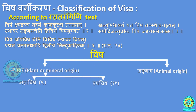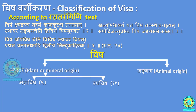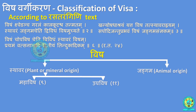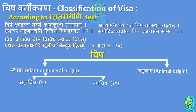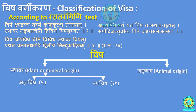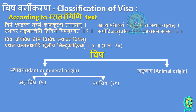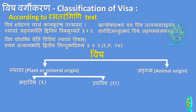Rasatarangini Shloka 6: 'Visham cha Uppavisham Cheti Dvividam Sthavaraam Visham. Prathamam Vatsanabhadi Dvithiyam Tindukadikam.' Prathamam or Mahavisham begins with Vatsanabha and includes nine drugs. Dvithiyam or Uppavisham begins with Vishatinduka and includes eleven drugs.